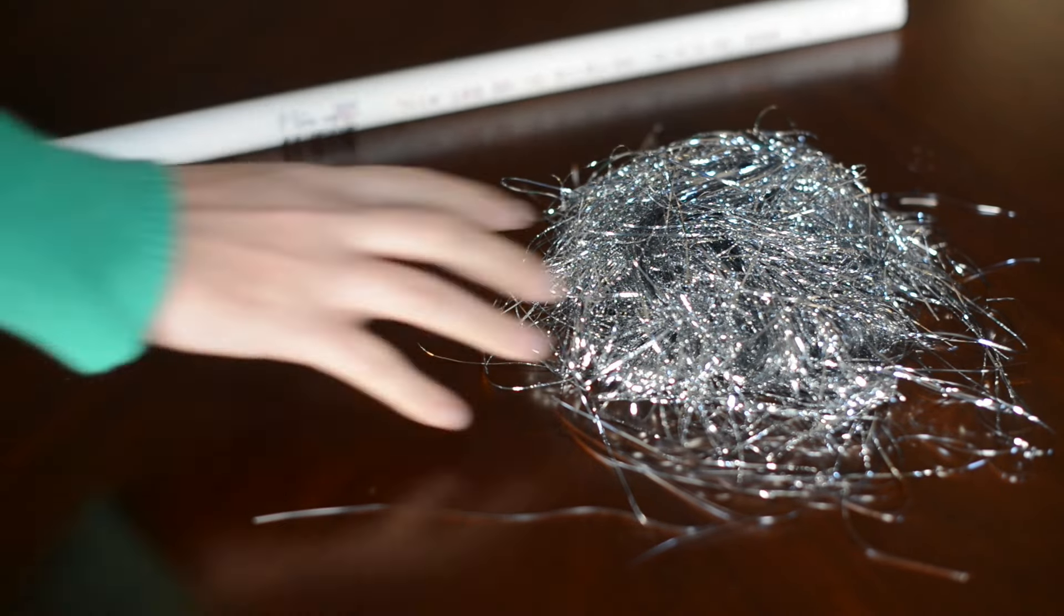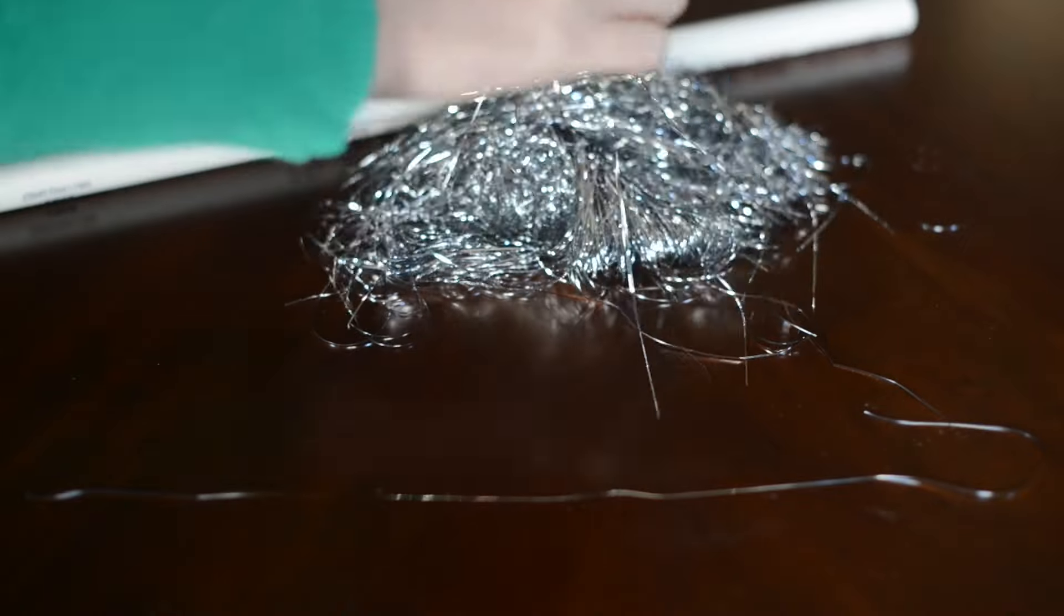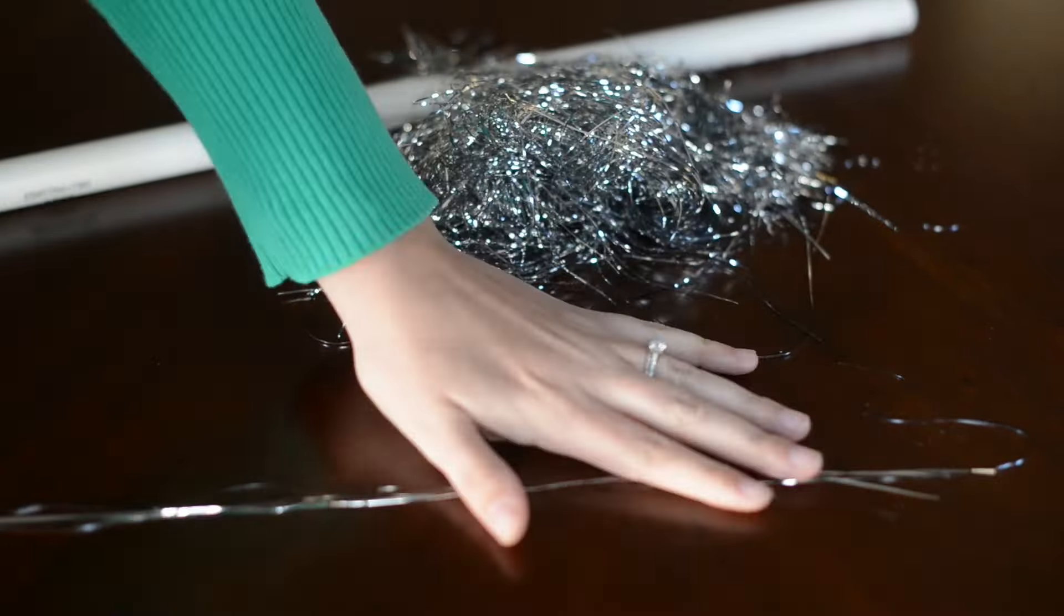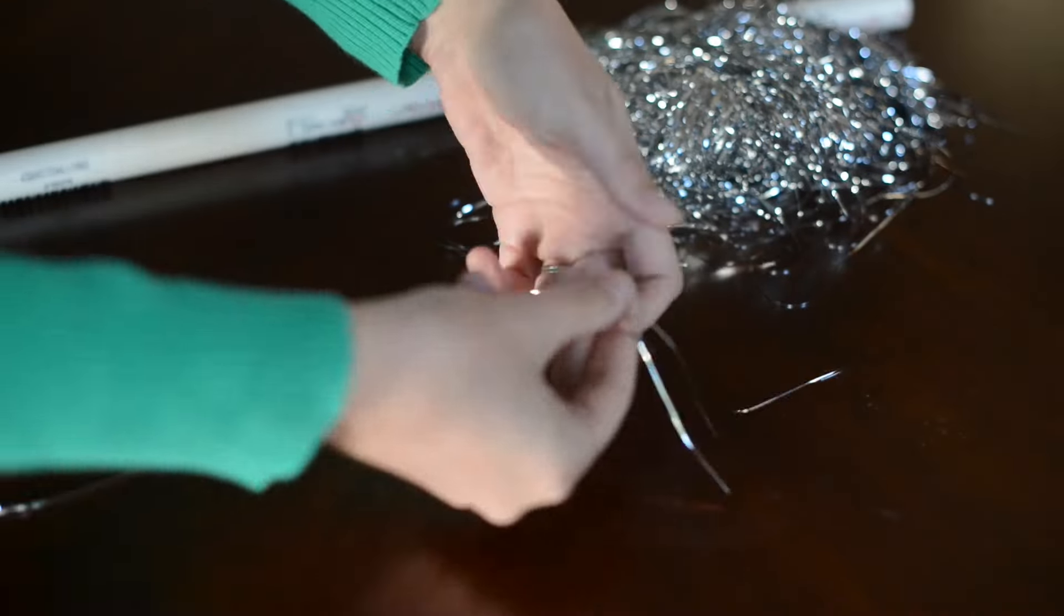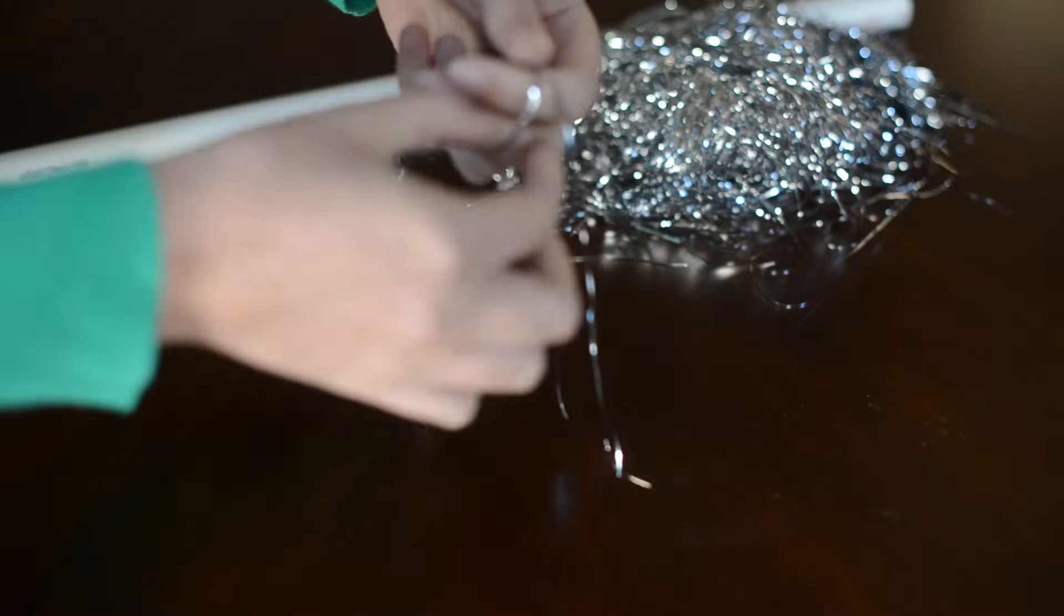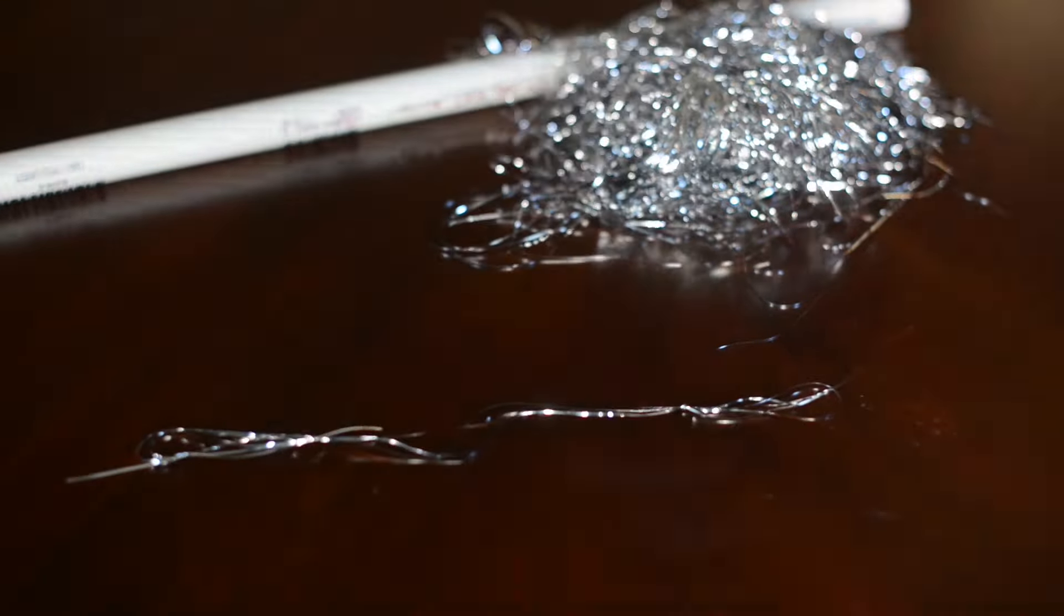All you need for this is a piece of PVC pipe and some Christmas tinsel. Take three to six strands of tinsel and tie them together on each end, about six inches apart. And then you cut off the excess on the end.